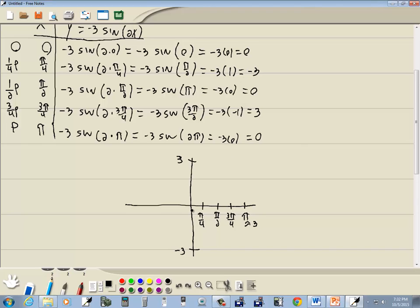Now, our first point is 0, 0. Next one is π over 4, negative 3. Next one is π over 2 and 0. Next one is 3π over 4 and 3. And then π and 0, which would be right here.